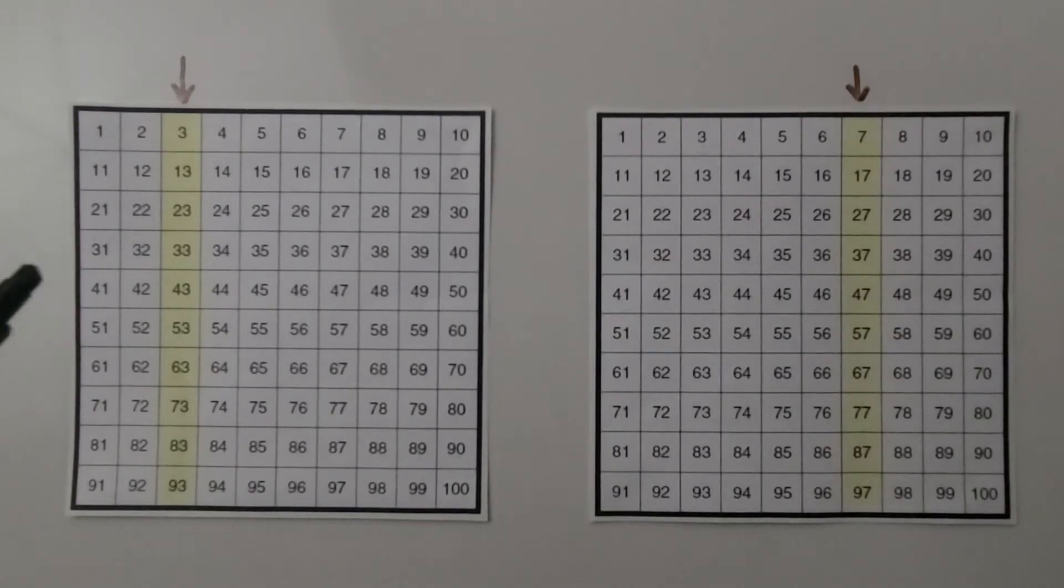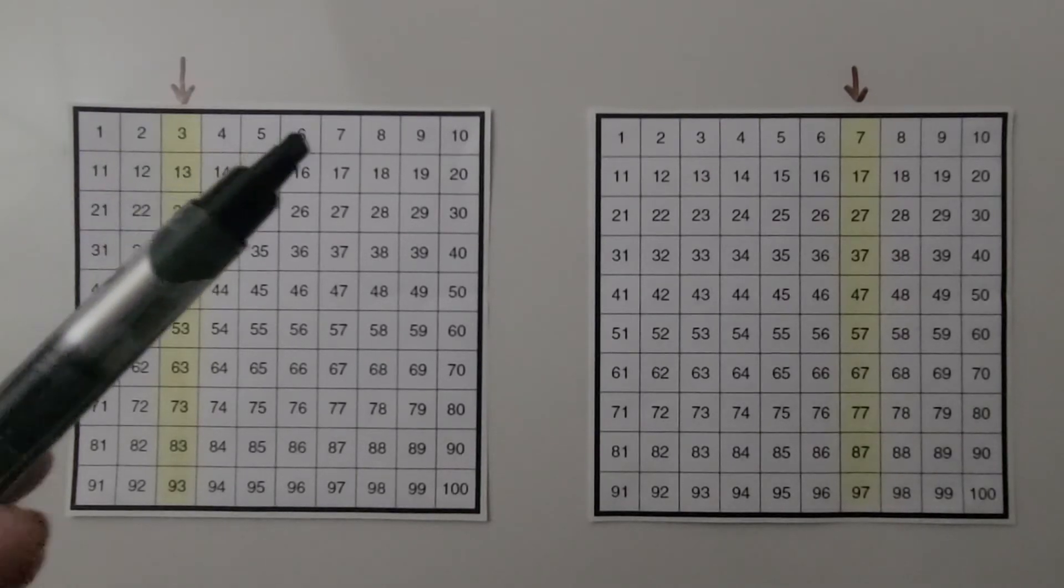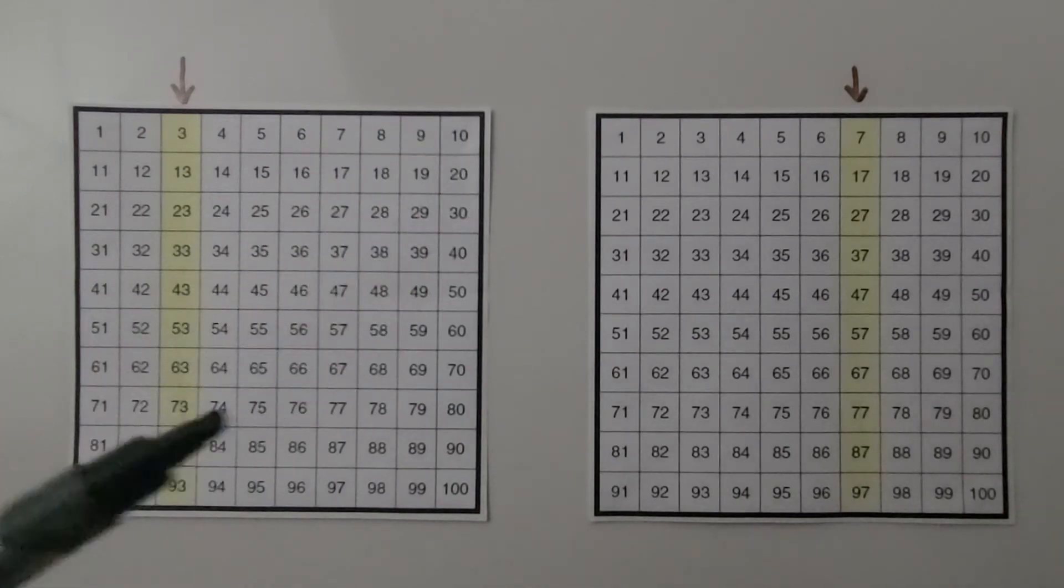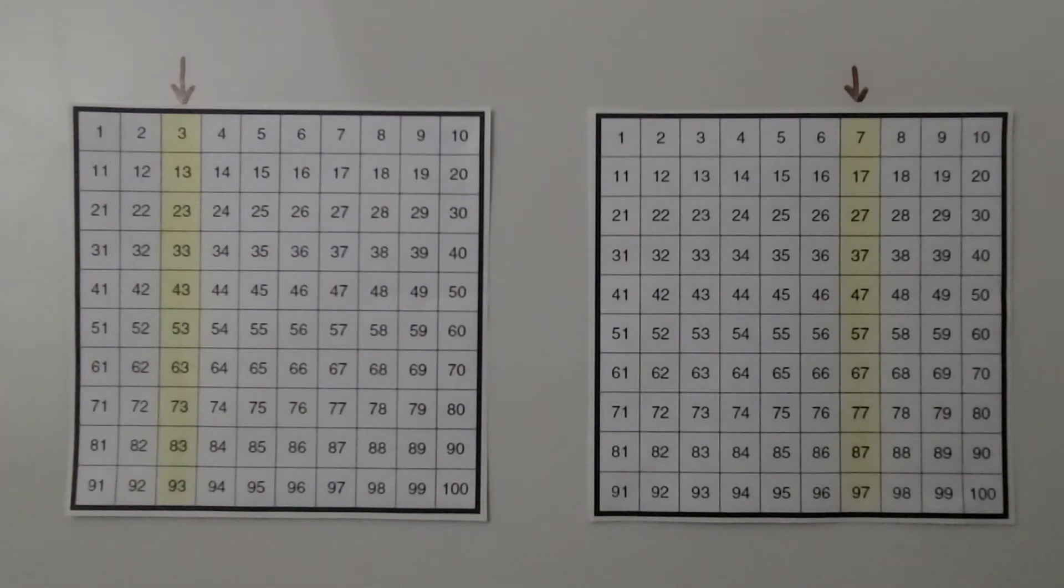In this first hundred chart, we can see there are 10 numbers in each row. There are 10 numbers in this row. There are 10 numbers in this row. This means going down the column, each number will be 10 more.